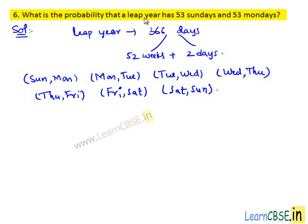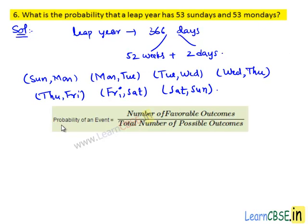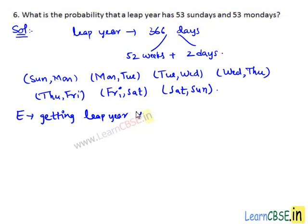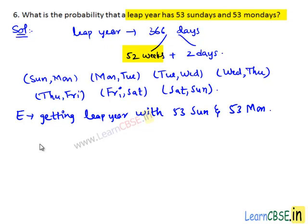We need to find the probability that a leap year has 53 Sundays and 53 Mondays. We know that the probability of an event is the ratio of number of favorable outcomes to the total number of possible outcomes. Let E be the event of getting a leap year with 53 Sundays and 53 Mondays. Here we see that 52 weeks has 52 Sundays and 52 Mondays.